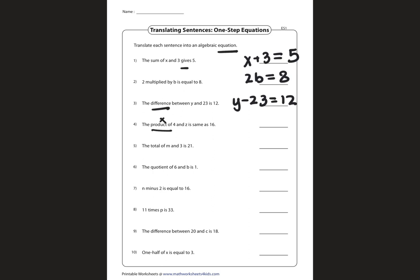Product, that's multiplication, of 4 and z is the same as 16. 'The same as' means equals. So 4z is equal to 16. Let's go on to the next one.